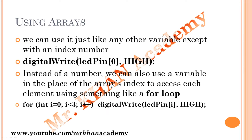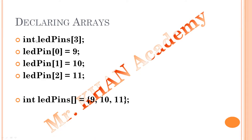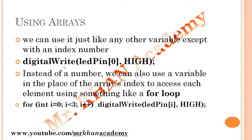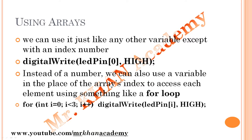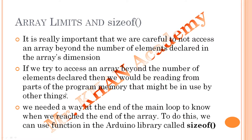To use an array, we use it just like any other variable except with an index number. For example, to turn on the LED connected to pin 9: `digitalWrite(ledPin[0], HIGH)` — the system knows the LED connected to pin 9 should turn on. Instead of a number we can also use a variable as the index. To access each element using a `for` loop: `for (int i = 0; i < 3; i++) { digitalWrite(ledPin[i], HIGH); }` — this turns on pins 9, 10, and 11 one by one using a single loop.